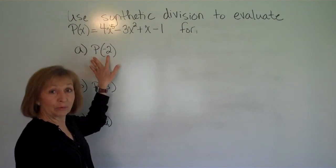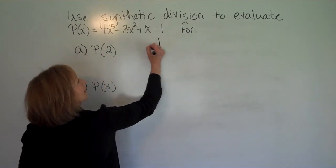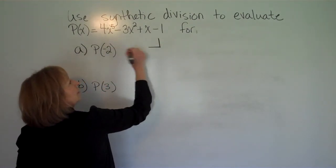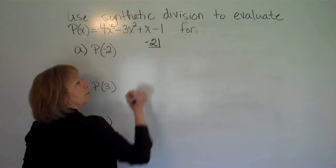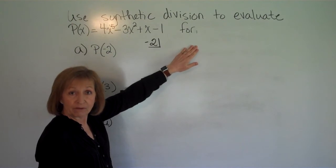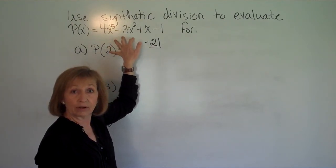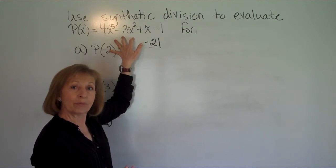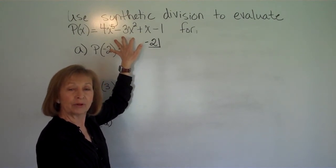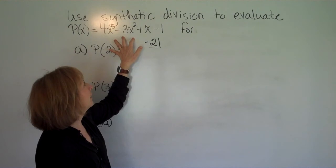To evaluate a polynomial at a specific value using synthetic division, in the half box we put the value that we want to evaluate the polynomial at. Then we want the coefficients of the polynomial, making sure the polynomial is in descending order, and if there are any powers on the variable that are missing, we show those coefficients as 0 to make sure that we get the correct value.